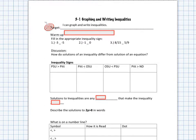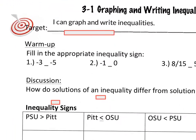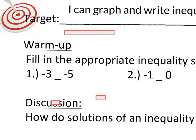Looking at the three inequalities, starting with negative three and negative five: negative three is larger than negative five because it's closer to zero, so we put a greater than sign there. You might have heard of the alligator or Pac-Man eating the larger number — those are ways to remember which way the inequality sign goes.